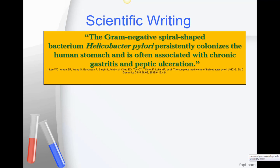Now, how do we write in science class? Scientific writing has particular conventions. Here's an example of scientific writing from a journal article called The Complete Methylome of Helicobacter pylori: "The gram-negative spiral-shaped bacterium Helicobacter pylori persistently colonizes the human stomach and is often associated with chronic gastritis and peptic ulceration." This sentence is informative and, although it may seem long, it's exactly as long as it needs to be — it has all the details it needs and nothing else.